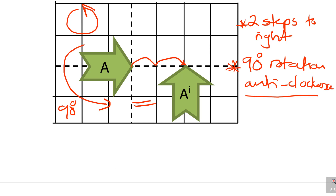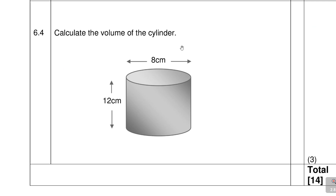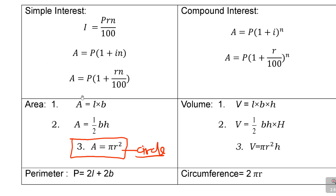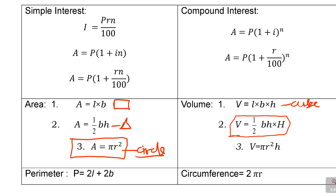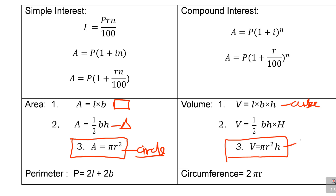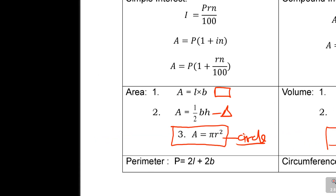Lastly, 6.4: calculate the volume of the cylinder — 3 marks. From the formula sheet: the volume of a cylinder is V = πr²h, where r is the radius and h is the height. That is the formula we need.